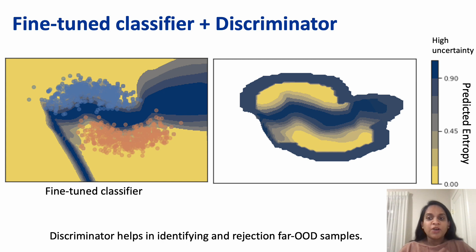Here we show the final uncertainty landscape of the classifier. The discriminator helps in identifying and rejecting far OOD samples, and the resulting classifiers have low uncertainty only at in-distribution regions.